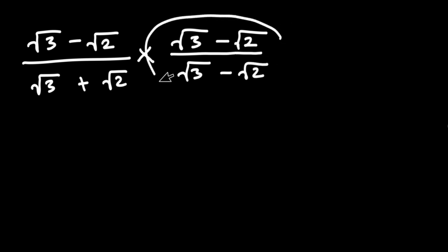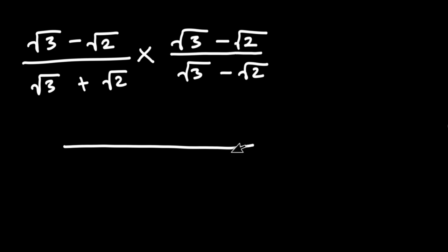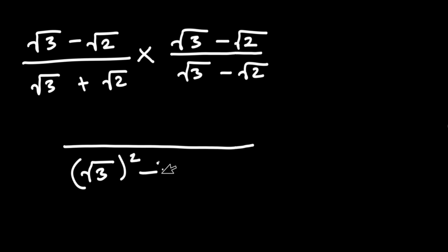You notice that this conjugate fraction equals 1, and any number times 1 is the number itself, so we haven't changed the value of the fraction. On the denominator side we have a difference of two squares, which can be written as square root of 3 all squared minus square root of 2 all squared.